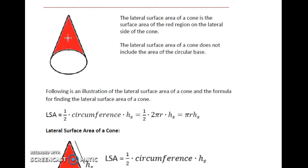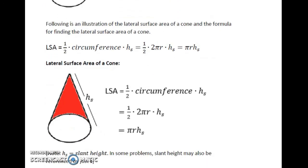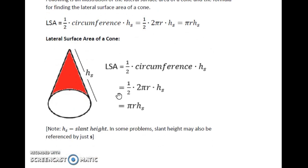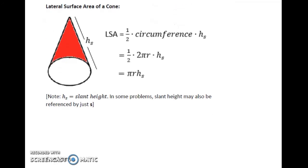So this would be the height, the regular height from the base of the cone to the vertex. Slant height is the height of the slanted side of the cone, HS. So lateral surface area is half of 2πR times HS, which simplifies to πRHS. In some problems, slant height may also be referred to as just S.